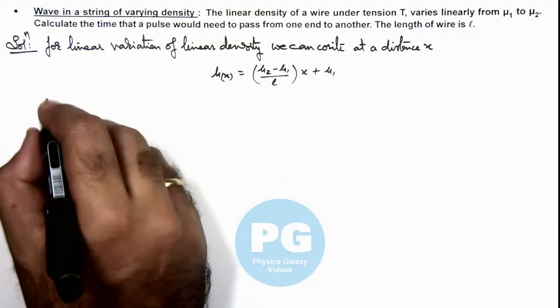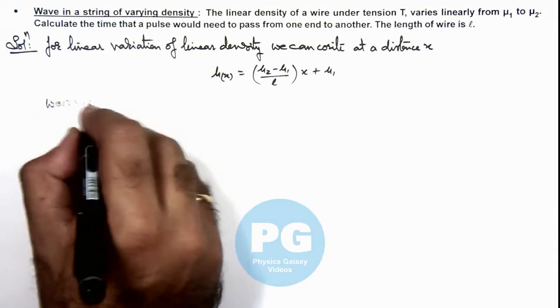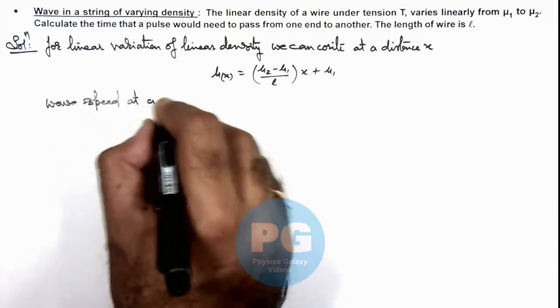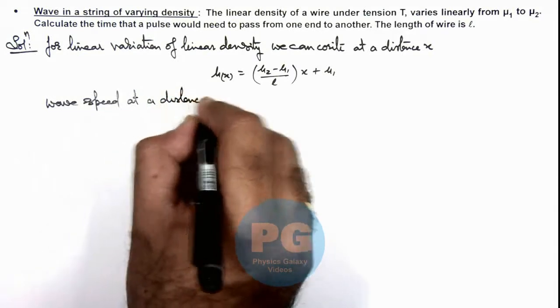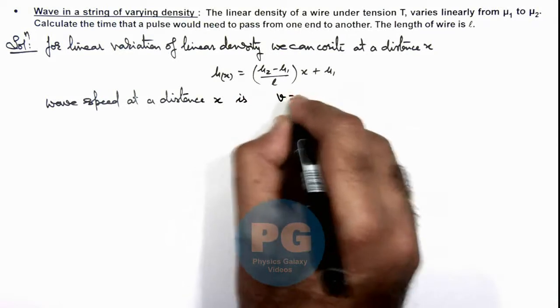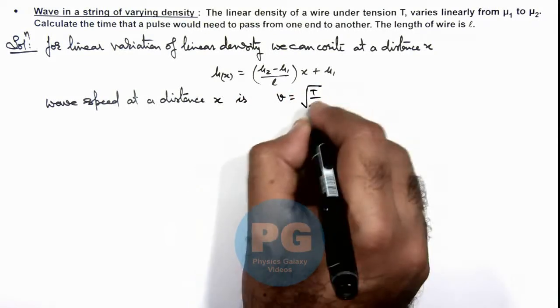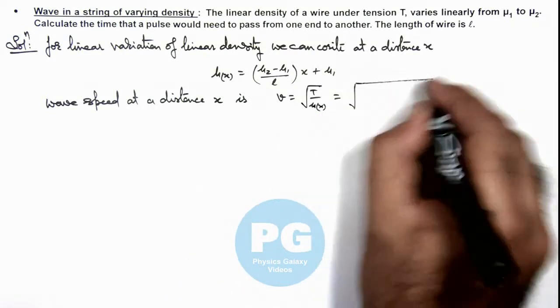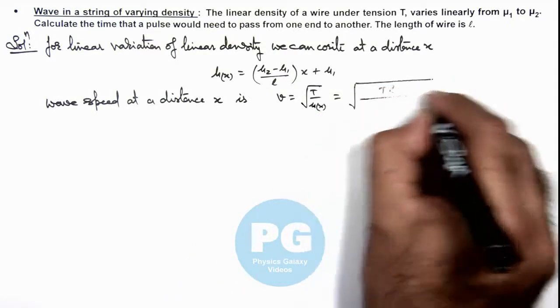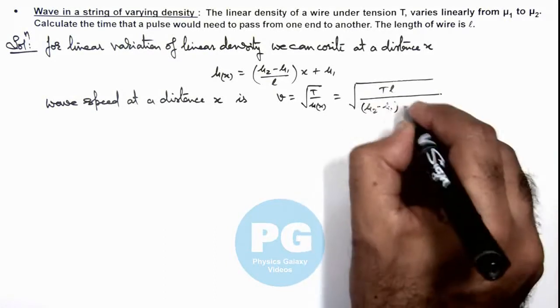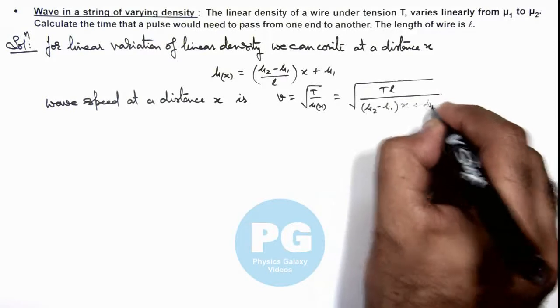So here, the wave speed at a distance x from one end is given as v = √(T/μ(x)). On substituting the value, this will give us √(TL / ((μ2 - μ1)x + μ1L)).